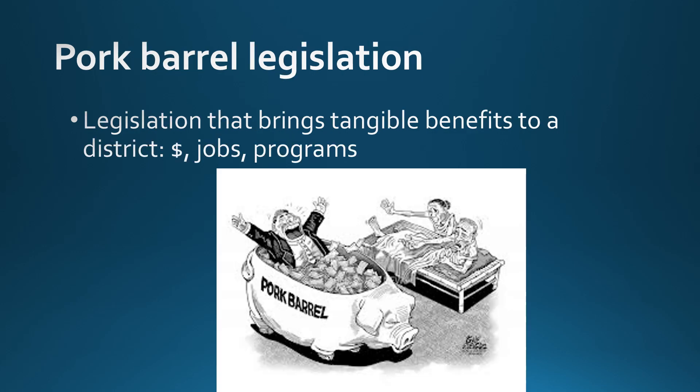One way is through the passage of pork barrel legislation. This is legislation that brings tangible benefits to a district — things like money, jobs, and programs. Representatives, when they're debating and discussing bills and trying to get bills passed, one of their main considerations is how to get reelected. Something they do in order to get reelected is they want to bring back something to their constituents.